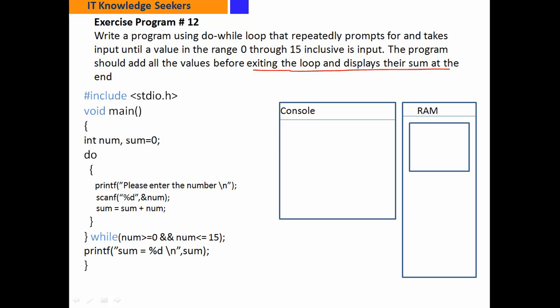अब इसमें देखें — पहली statement है: int num — integer type, 2 byte num के लिए reserve होंगे, और 2 byte reserve होंगे sum के लिए। जैसे ही variable declaration की statement चली तो 2+2=4 byte RAM के लिए reserve होंगे। sum को हमने initialize भी कर दिया 0 के साथ। Do-while की loop body है — पहली statement output statement है जो message लिखा है as it is आ जाना है।